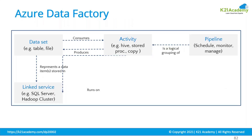Coming to the core components of Data Factory: the first is a dataset. We also have linked services, activities, and the fourth component is pipeline. So what is the meaning of pipeline?